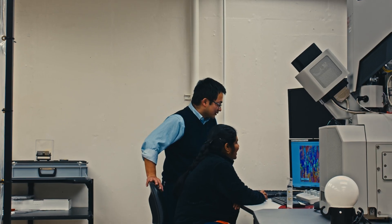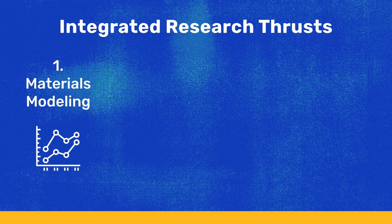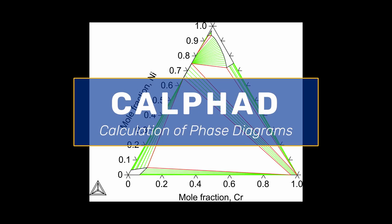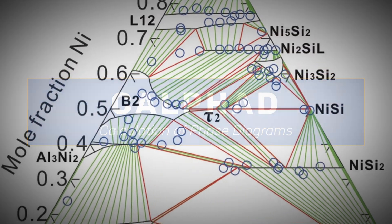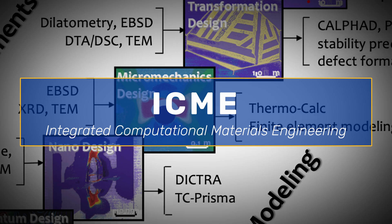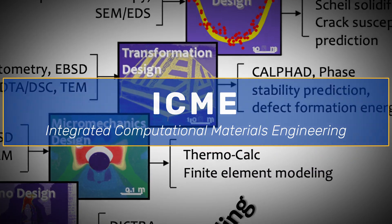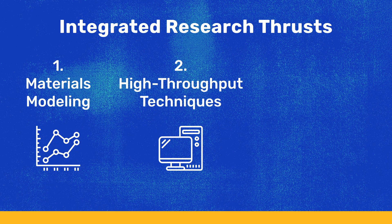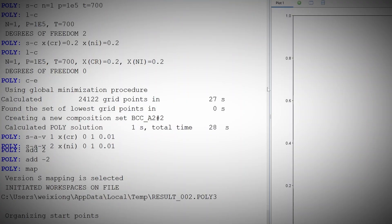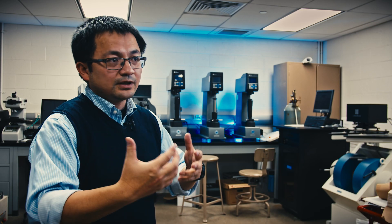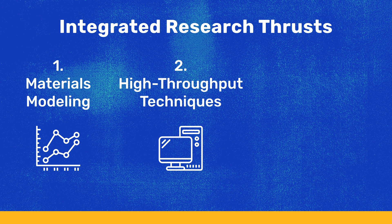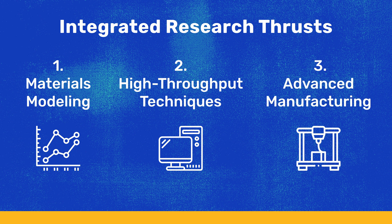Our projects fall under three different categories. The first category is fundamental model development, trying to predict materials microstructure and properties as best as we could. The second one involves high-throughput experiments and computation — we generate a lot of data, and then utilizing that data we can do machine learning work.